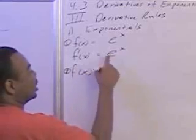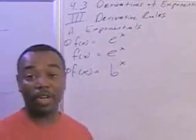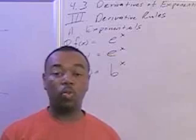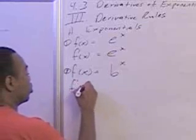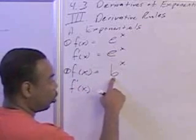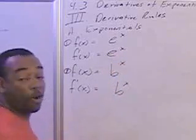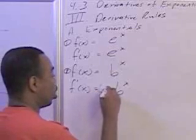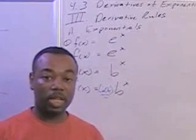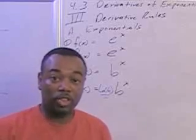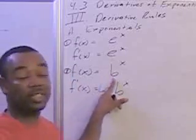Now, if your function does not have the base e, when you take the derivative you'll get just about the same thing but with a little extra piece. The derivative of a general base, b to the x, will be b to the x again — just like e to the x is e to the x — but with the coefficient of natural log of b. Since b is a constant, natural log of b is also a constant, so we basically just put a constant in front of b to the x.